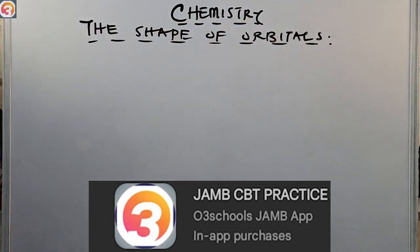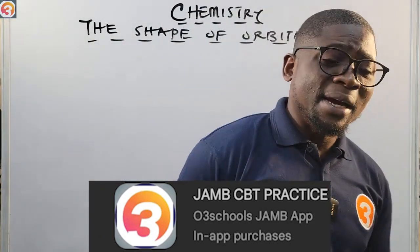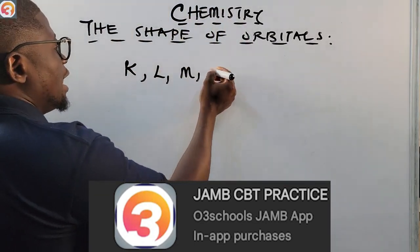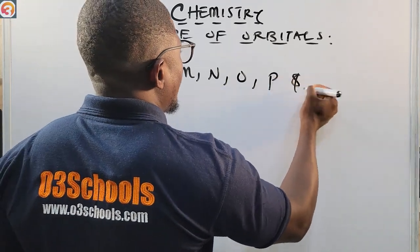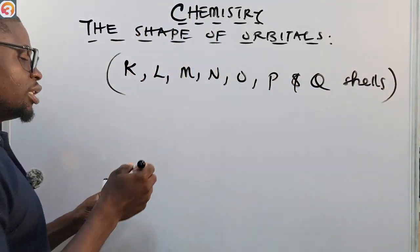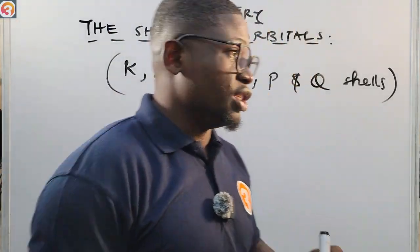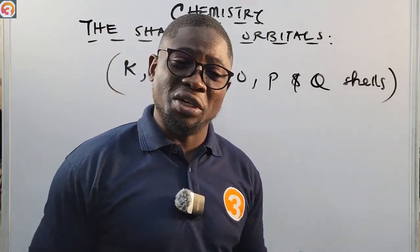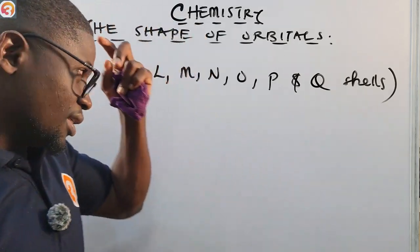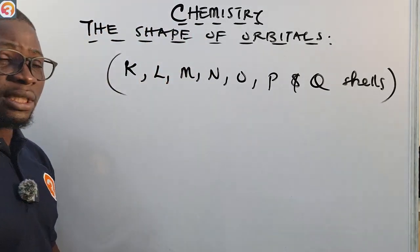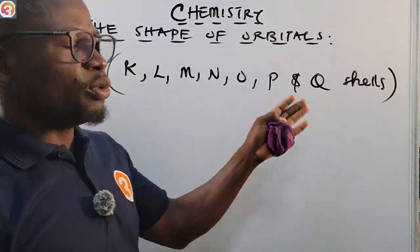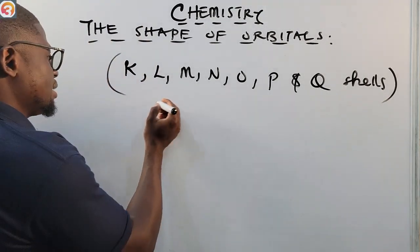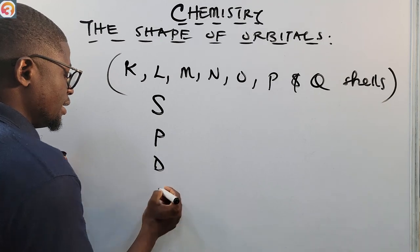Now, the shape of orbitals. There are principally four types of orbitals that make up the K, L, M, N, O, P, and Q shells. If you followed along when we did electronic configuration, this will not be new to you. These four types of orbitals are the S, P, D, and F orbitals.